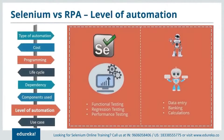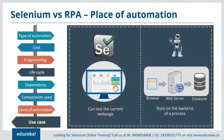On level of automation — Selenium automates functional, regression, and performance testing and does not automate clerical processes. Whereas RPA automates all clerical processes like data entry, calculations, and so on. On use case — Selenium works on the front end of the process and tests the current web page, whereas RPA works on the back end and deals with time-consuming processes. Browser details are sent via the web server and stored in a sequence onto the database.